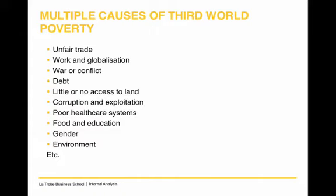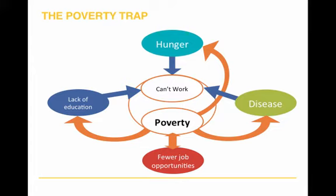There are multiple causes of global poverty in a number of parts of the world, such as unfair trade, war or conflict, little or no access to land, poor healthcare systems, etc. These multiple causes interact together to create the poverty trap, which makes it even harder to escape. Different events and circumstances in the lives of those living in poverty reinforce their situation. For example, hunger, disease and lack of education lead to fewer job opportunities.